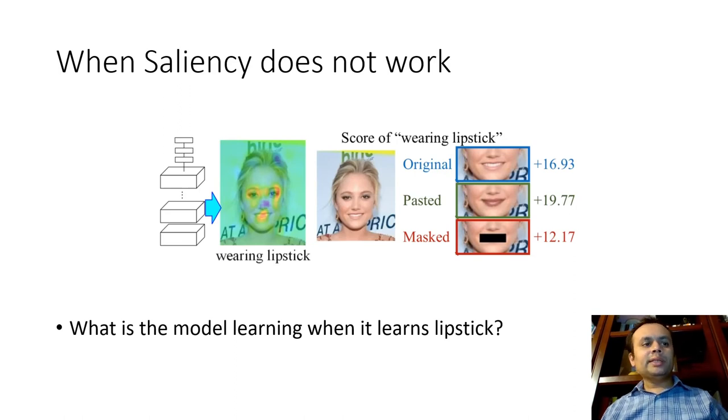So, a complementary question that we can ask is, when does saliency not work? So, in this slide, consider the visual where the task is to score given an image of a person, whether the person has lipstick on or not. So, you can consider the original image, a pasted image where there is a prominent lipstick, and also when a masked image is given. So, if you look at the scores of all the three images, even the case of the masked case, we are getting a positive score. Which raises the question, what exactly is it that the model is learning? And most certainly, it's not learning, quote-unquote, the concept of wearing lipstick.